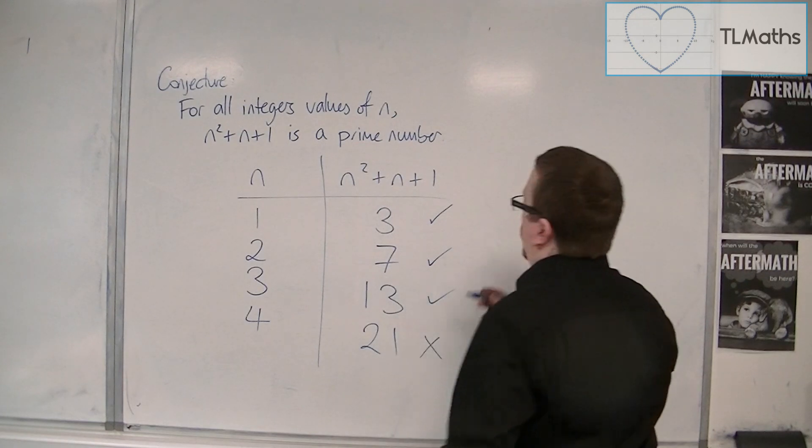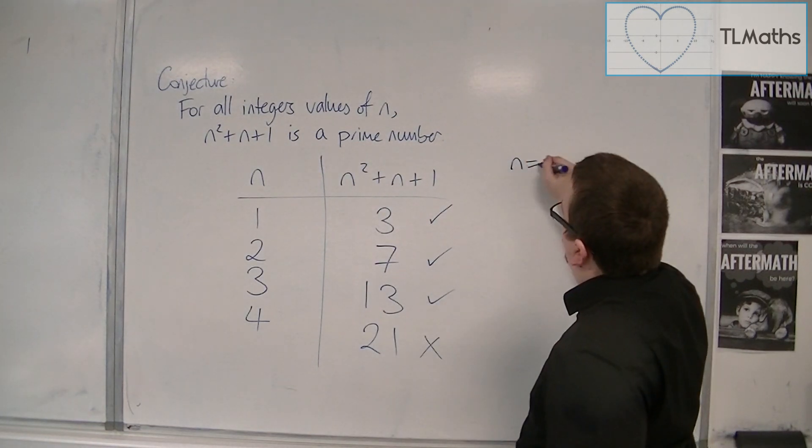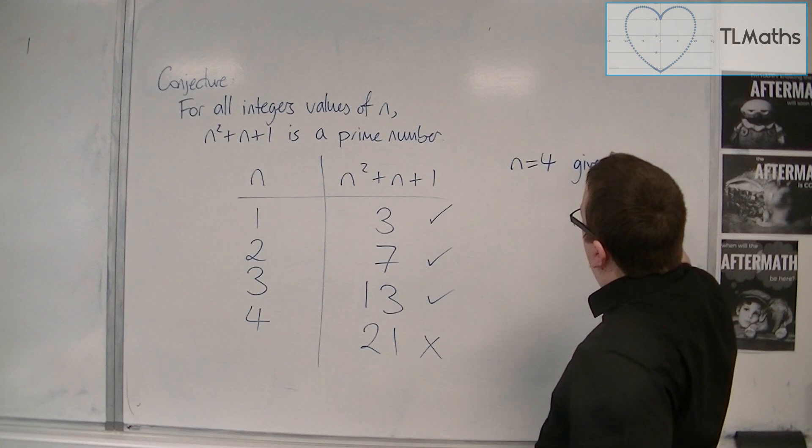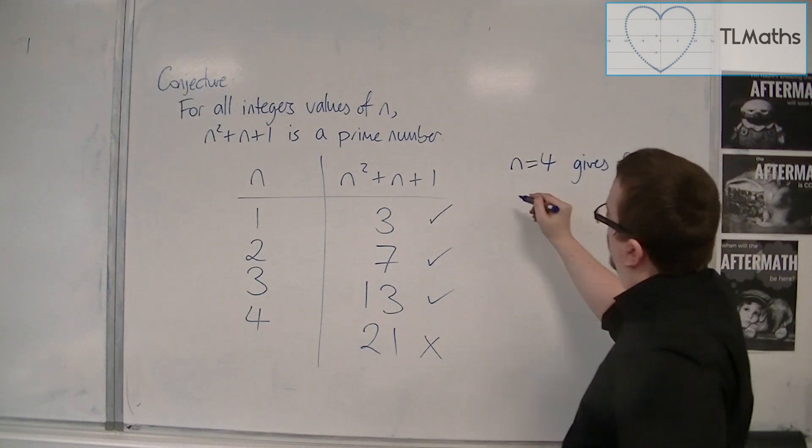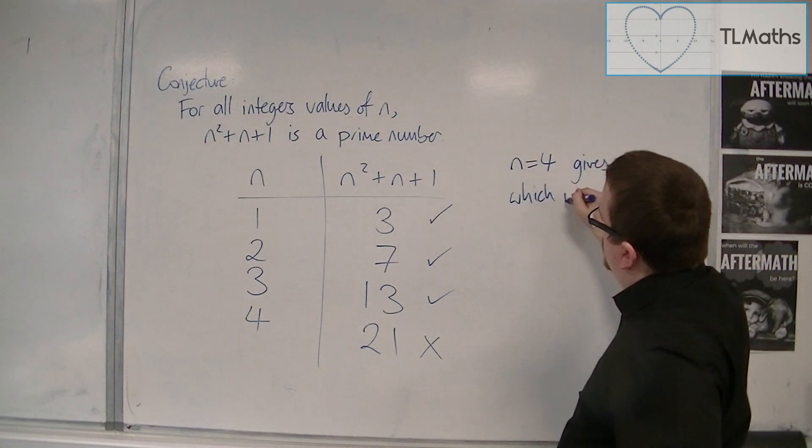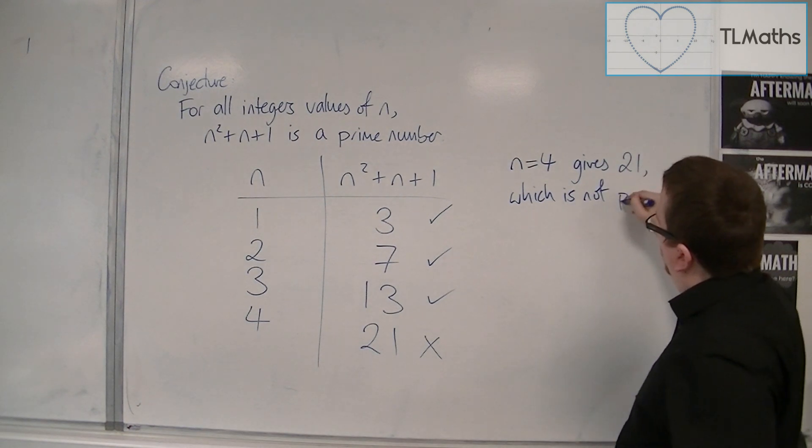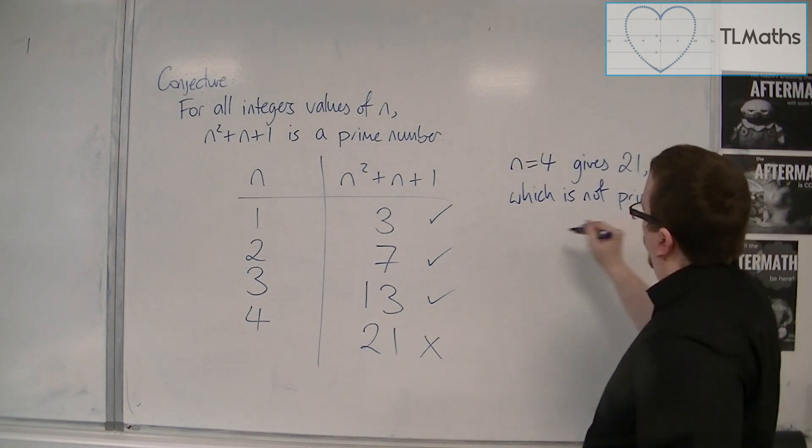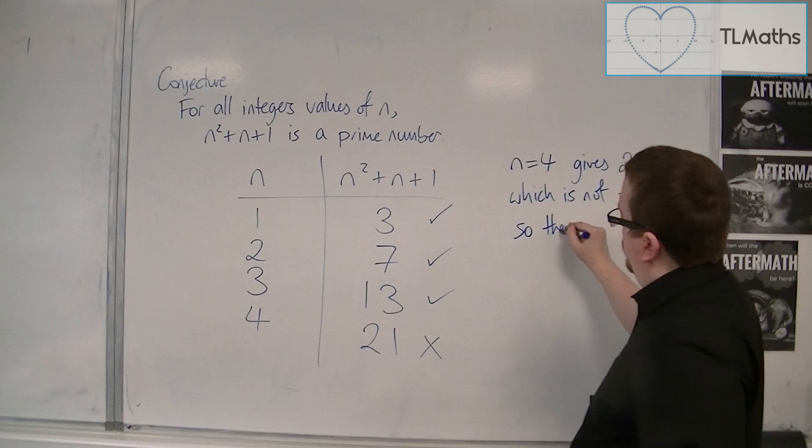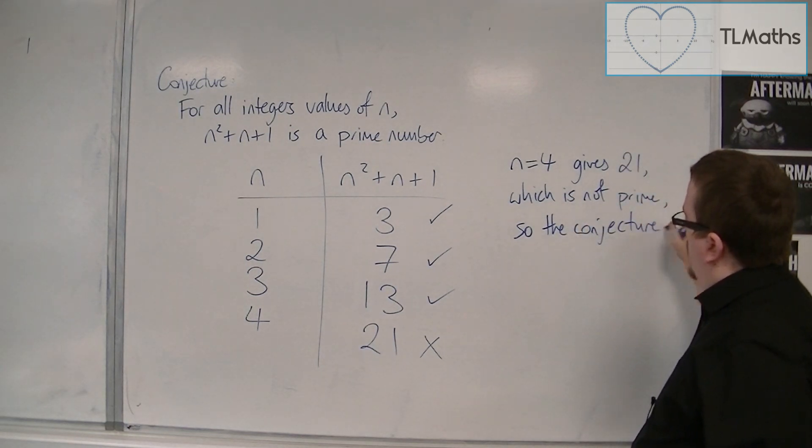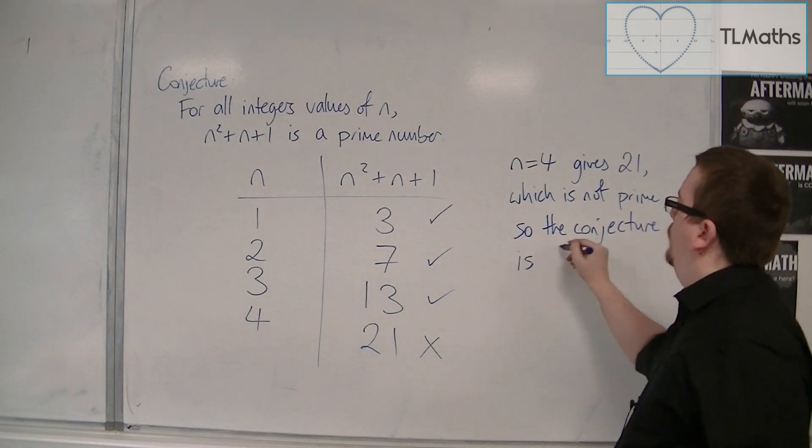So n equals 4 gives 21, which is not prime. So the conjecture is incorrect or false.